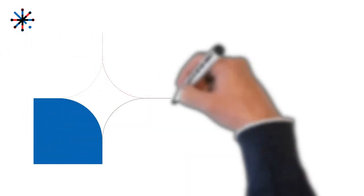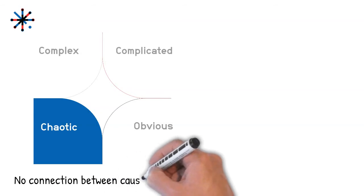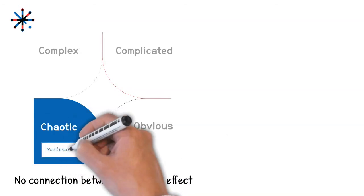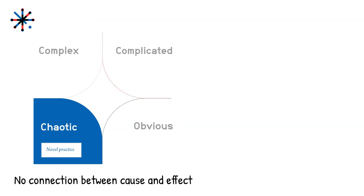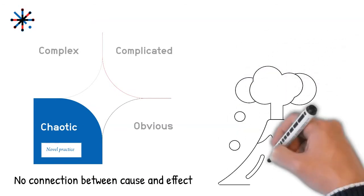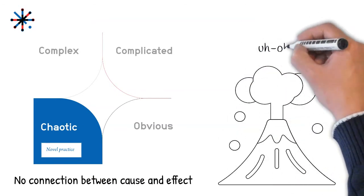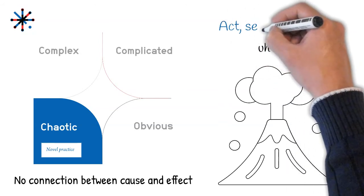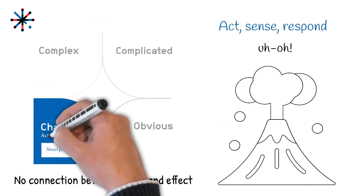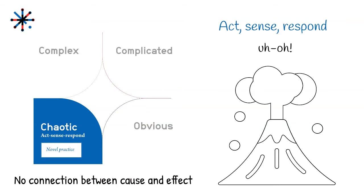Finally, there is the chaotic domain, where there is no connection between cause and effect. This is the domain where there are novel practices. An example is a volcano eruption. In these situations, the best strategy is to act, sense, and respond: first take action, and only then observe what happens and adjust course.